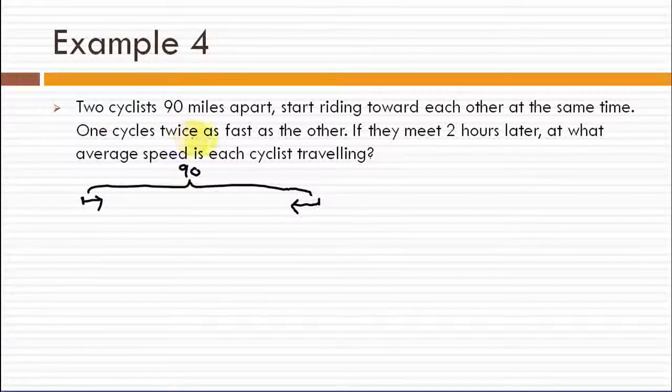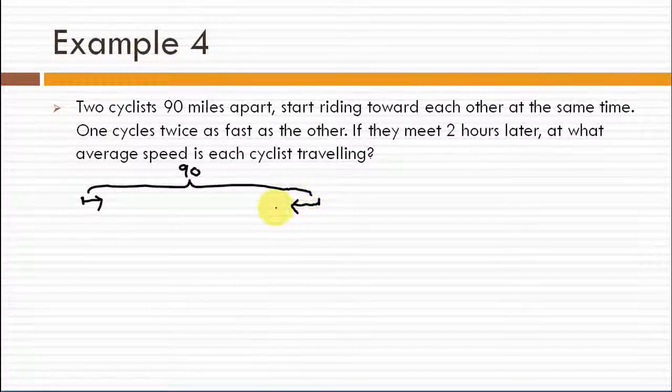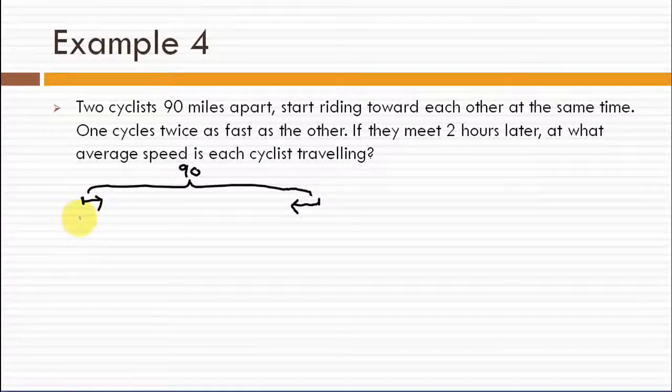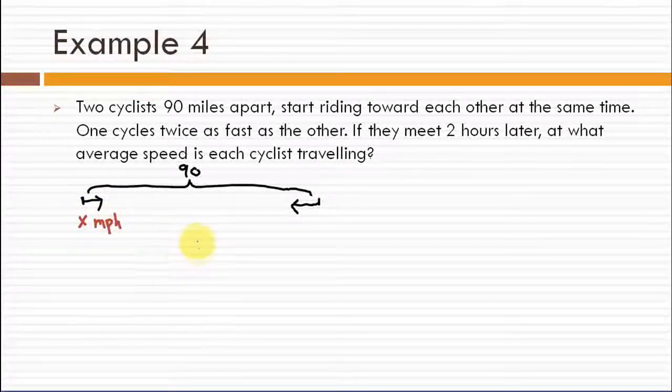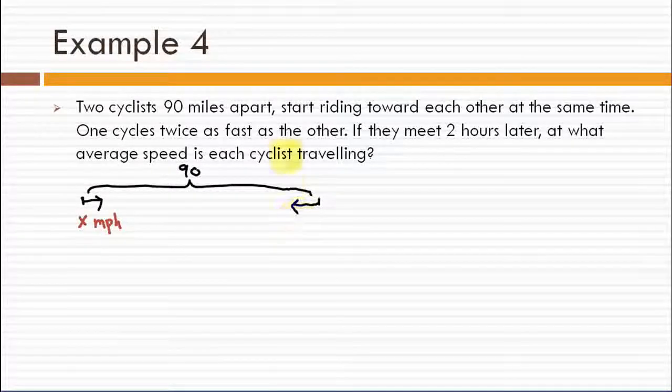One cyclist is twice as fast as the other. If the first cyclist moves x miles per hour, we can assume the other cyclist is twice as fast as this cyclist.